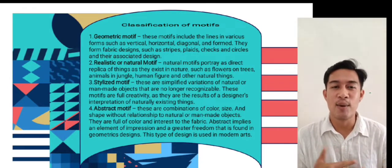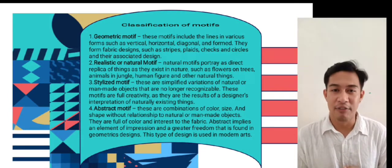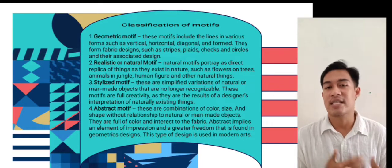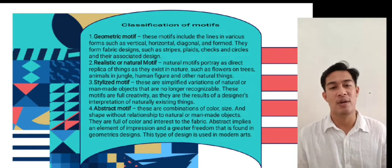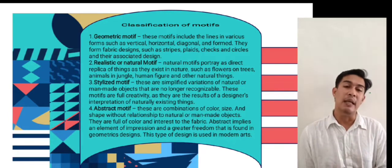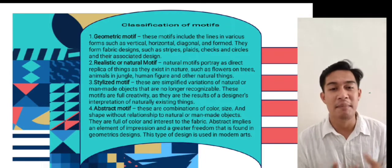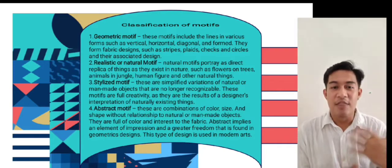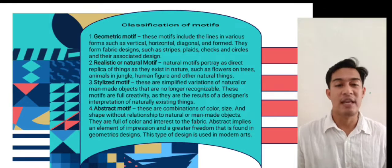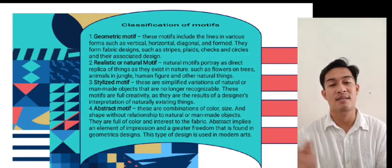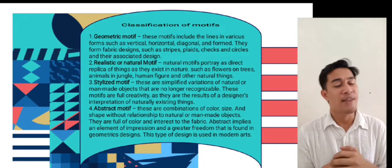Second, realistic or natural motif. Natural motifs portray a direct replica of things as they exist in nature, such as flowers or trees, animals in the jungle, human figures, and other natural things. For example, the first birthday of Zion, the son of Mr. and Mrs. Richard and Sara Gutierrez, had a safari motif — featuring trees, flowers, and animals in the jungle to represent the safari theme.